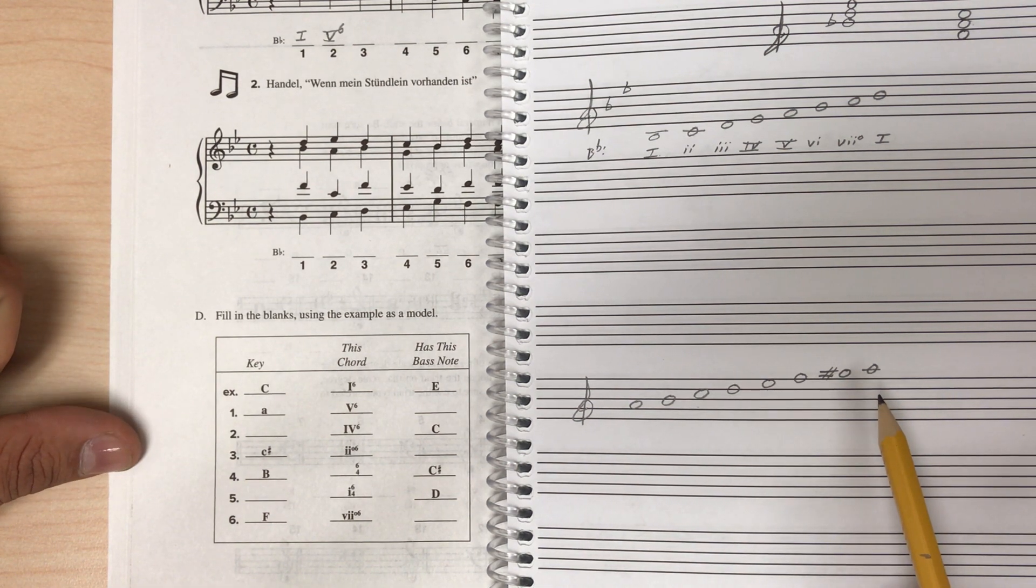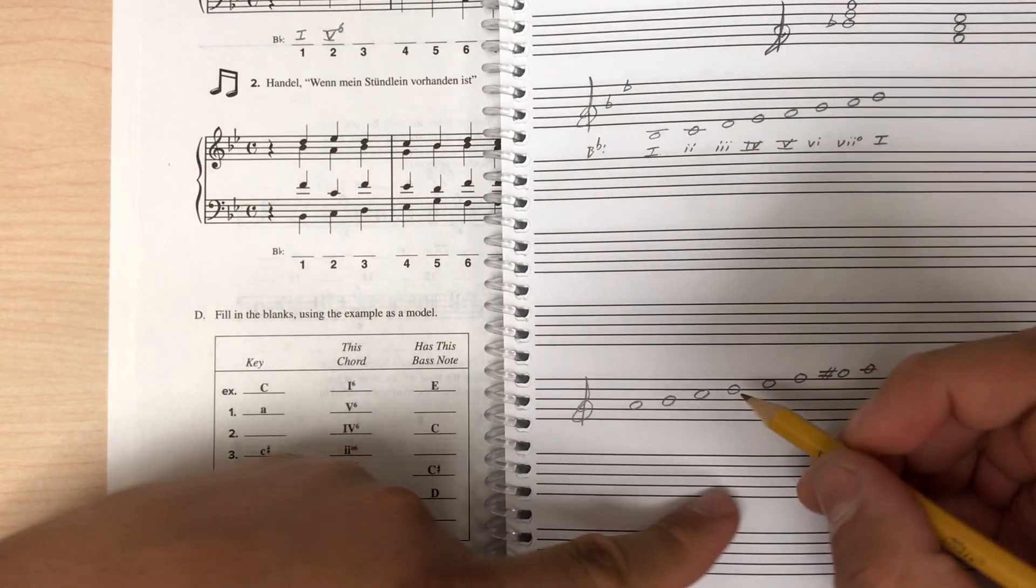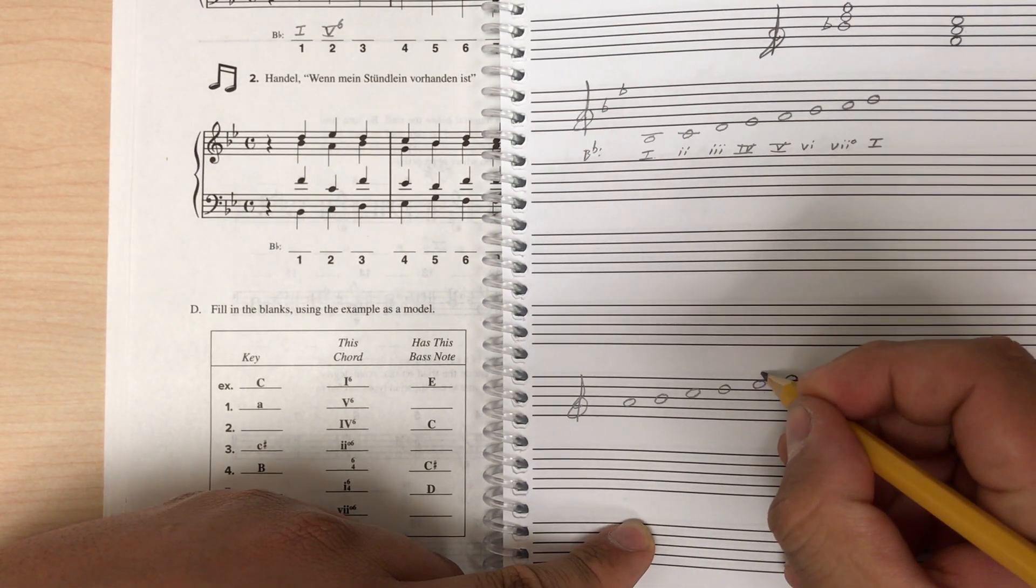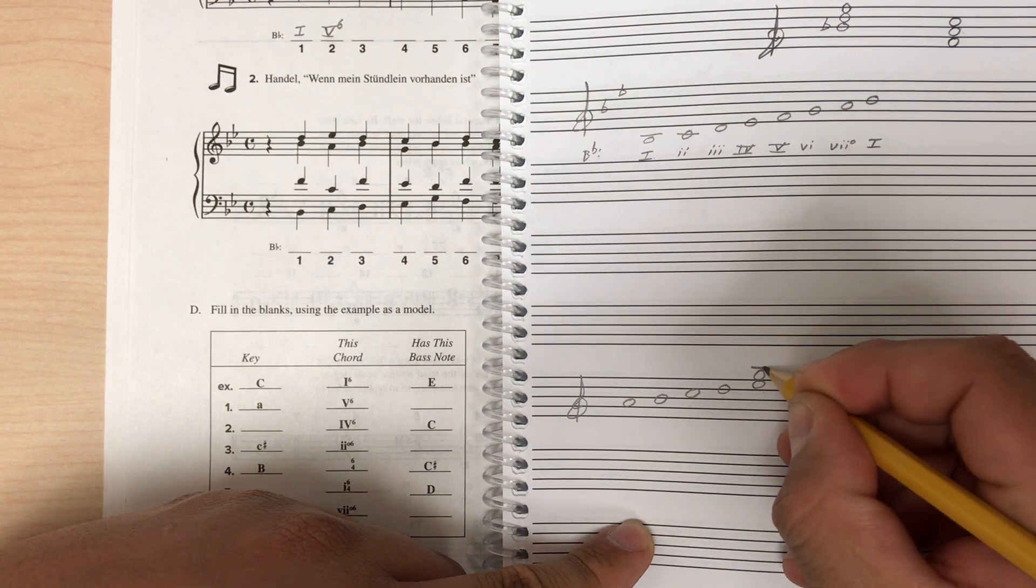And let's start by figuring out what our V chord is. So our V chord, 1, 2, 3, 4, 5, is an E chord.